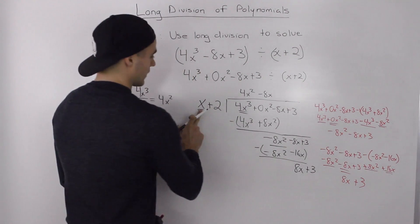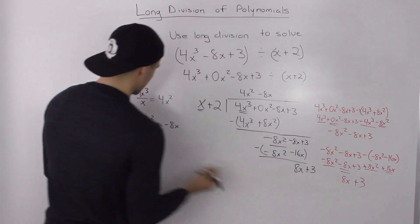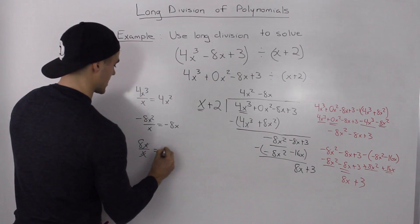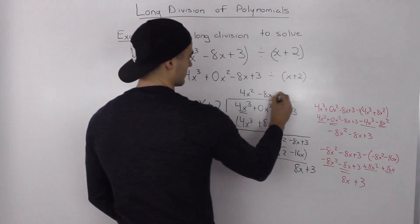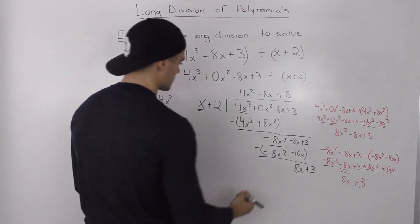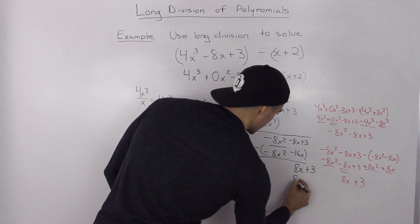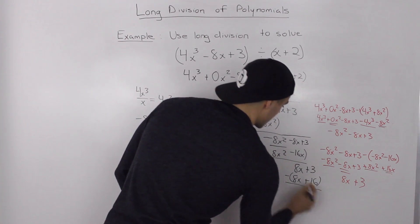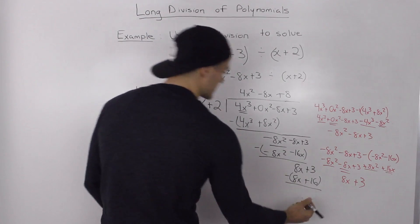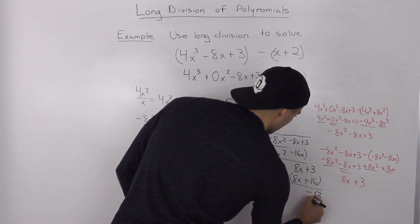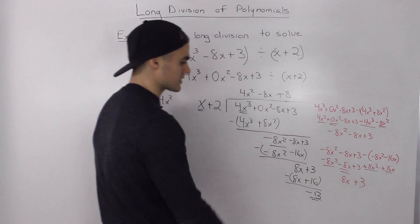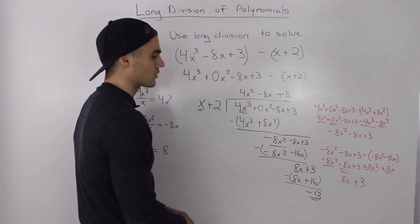So, then we find out how many times does x go into 8x. So, 8x divided by x, well, the x's just cancel out, and we're just left with 8. So, 8 times x plus 2, that ends up giving us 8x plus 16. Then, when we subtract these, the 8x's cancel out. 3 minus 16 ends up giving us negative 13. And, x plus 2 can't go into negative 13, so negative 13 is our remainder.